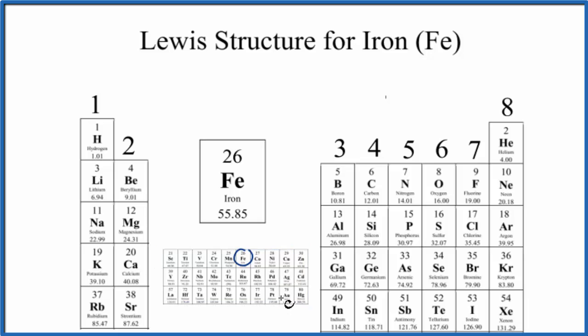In general you don't draw Lewis structures for these elements because they can lose different numbers of valence electrons when they form chemical bonds, so it's not as meaningful to draw the Lewis dot structure for iron. But if you're asked, here's how you might think about it.